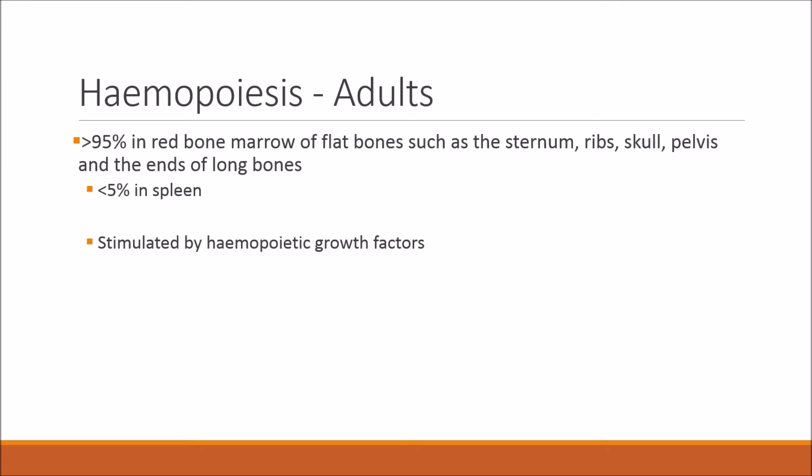In adults, 95% or more of haemopoiesis occurs in the red bone marrow in flat bones such as the sternum, ribs, skull, and pelvis, and in the ends of long bones such as the thighs. Less than 5% occurs in the spleen. All of this is stimulated by haemopoietic growth factors.